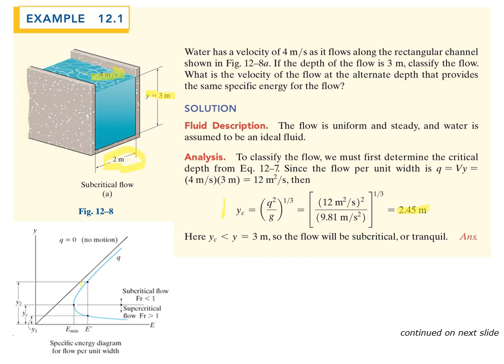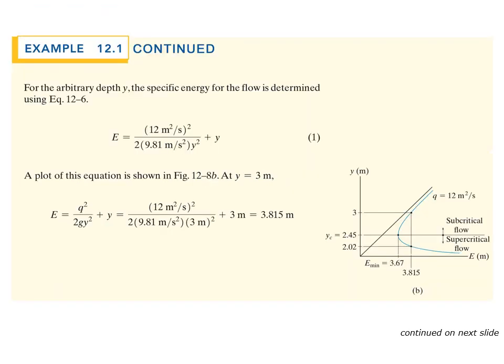For an arbitrary depth Y, the specific energy of the flow is determined using the specific energy equation. Once we know small q and g, we can plug them in. With the water at 3 meters, plugging Y equals 3 meters gives us the specific energy at that depth. We are subcritical, above the critical depth.